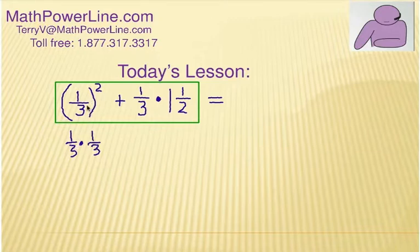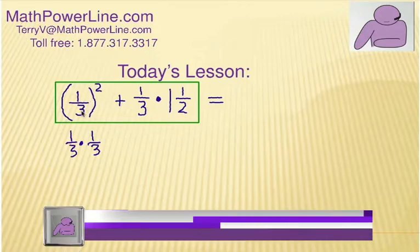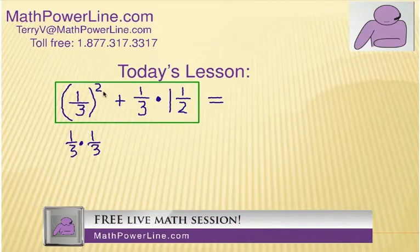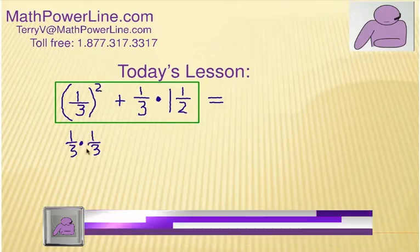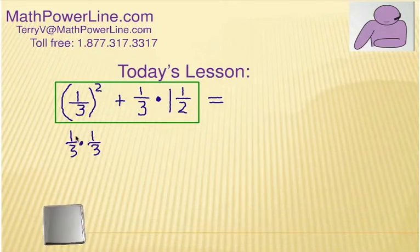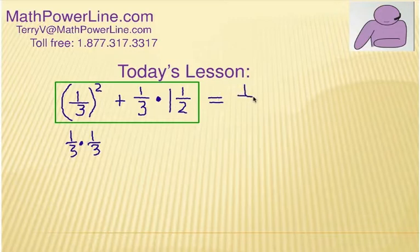Another way to think of it is you're going to square the one on top and square the three on the bottom — that squaring happens to both numbers. So when you multiply it together, that'll be one-ninth. Let's start with that and we'll just set it off to the side and deal with it a little bit later.